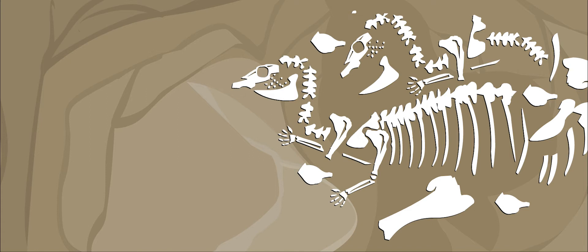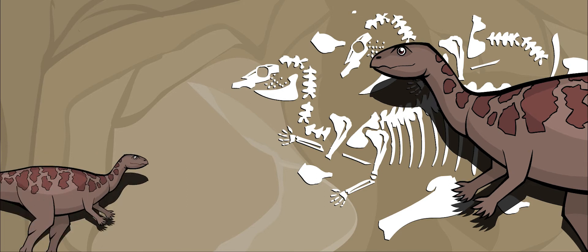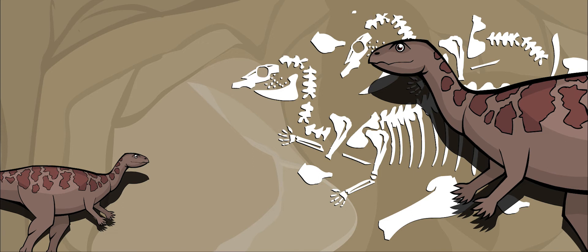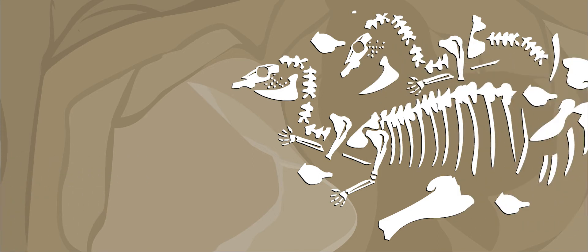We know a lot about this dinosaur, because lots of Dryosaurus skeletons have been found. It was a very common dinosaur during the Jurassic period. Paleontologists have found fossils of both adults and babies, which is helpful for studying the way the dinosaur grew.